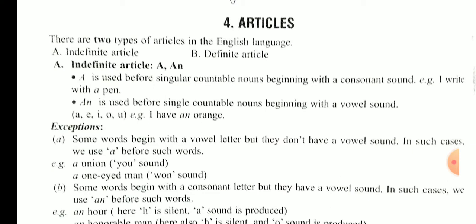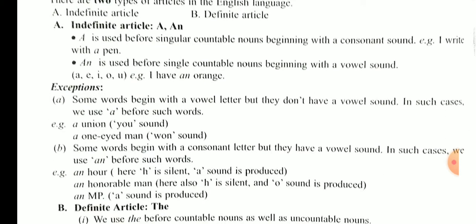अब ये थोड़ा सा twist आगई है। अब आप words को बोल कर देखोगे। Like, for example, मैं आपको देती हैं - union. Union आपको लगेगा U जो है वो vowel है तो ये हमारा 'an' लगेगा। लेकिन यहां पर 'a' क्यों लगाया? इसलिए क्योंकि union जब आप बोलते हो तो 'यू' का sound आ रहा है। और 'you' means Y-O-U, जब हम बोलते हैं तो Y जो है वो हमारा consonant है, vowel नहीं। इसलिए union के साथ 'a' लगेगा।